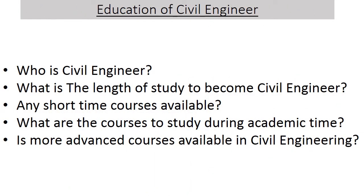Now the question comes to mind: what education is needed to become a civil engineer? A civil engineer is someone who typically possesses an academic degree in civil engineering. The length of study is three to five years, and the completed degree is designated as a Bachelor of Engineering or a Bachelor of Science in Engineering. Diploma courses are also available, which are shorter than a Bachelor of Engineering. The curriculum generally includes classes in physics, mathematics, project management, design, and specific topics in civil engineering.